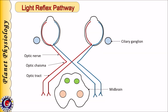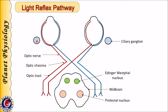Now let us study the pathway for light reflex. These are the eyeballs giving rise to the optic nerve, then optic chiasma, then optic tract. The lateral geniculate body is not shown in this diagram because impulses for light reflex do not go to the lateral geniculate body. This is the cross section of midbrain showing the pre-tectal nucleus and Edinger-Westphal nucleus.